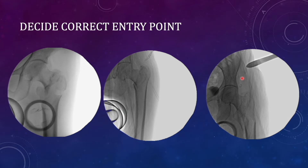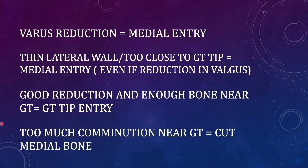Now coming to the entry point. Varus as well as flexion in inter-trochanteric fractures can be corrected by traction. If not, leave everything on your entry point and direction of proximal reaming. There can be multiple fracture types: excessively comminuted fractures, simple fractures with varus alignment, or fractures where the fracture line is below the trochanteric area with that part still intact. If your reduction is in varus, you definitely have to go for a medial entry point.